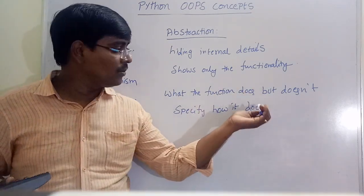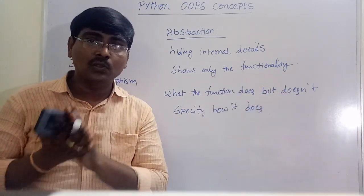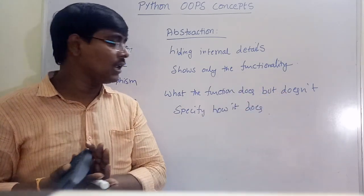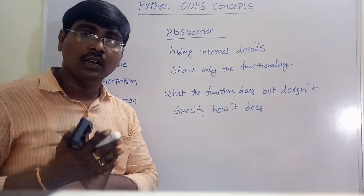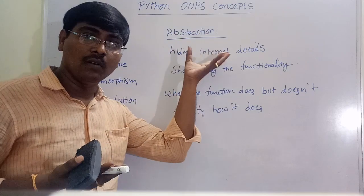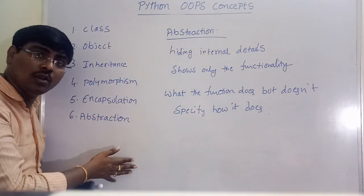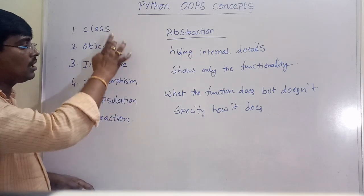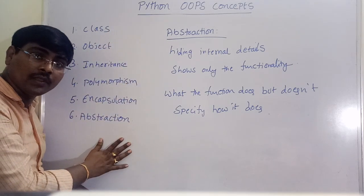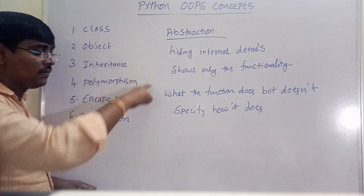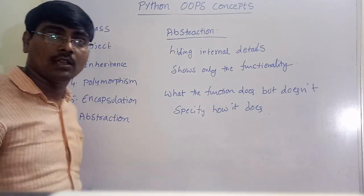For example, many operating systems or applications show only the functionality of that particular application, but how the application is designed is not shown to the user — those details are only for developers. That is abstraction. These are the object-oriented principles: class, object, inheritance, polymorphism, encapsulation, and abstraction. In the later sessions we will discuss each principle along with creation and examples. Thank you.